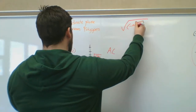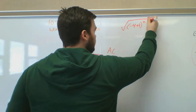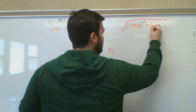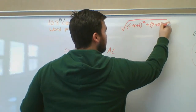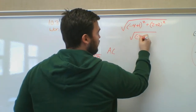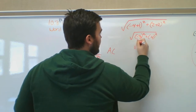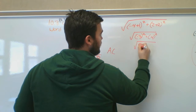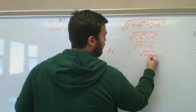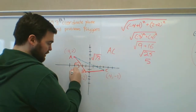For AB: √((−4 − (−1))² + (2 − (−2))²) = √((−4 + 1)² + (2 + 2)²) = √((−3)² + 4²) = √(9 + 16) = √25 = 5. So this length is 5. Sometimes you get a nice whole number.